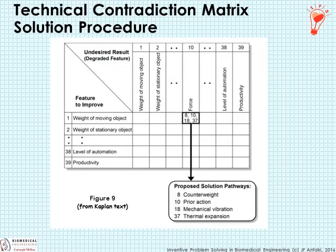Once you've identified the two competing parameters, you then go to the contradiction matrix, once again defined by Altshuller, in which the rows represent the features that you want to improve and the columns represent the undesired results or the features that are degraded. The corresponding cell — that's the intersection of the two — has the shorthand notation of the various inventive operators that apply to that given problem.